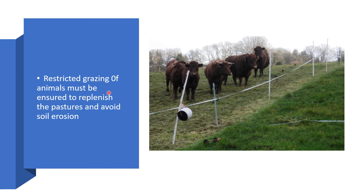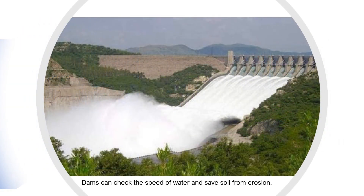Restricted grazing of animals must be ensured to replenish the pastures and avoid soil erosion. Construction of dams can also check the speed of water and save soil from erosion.